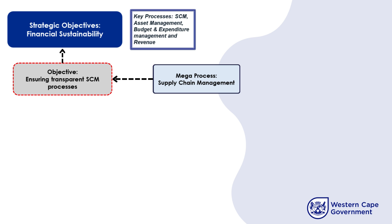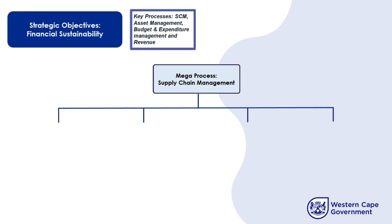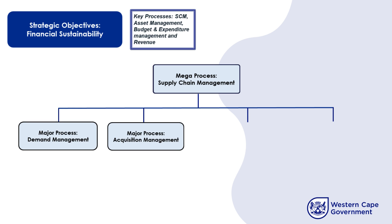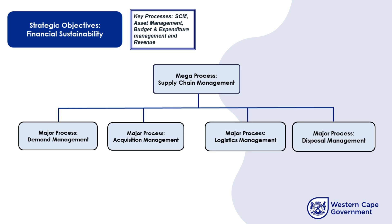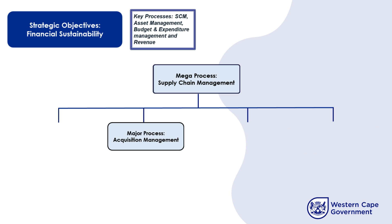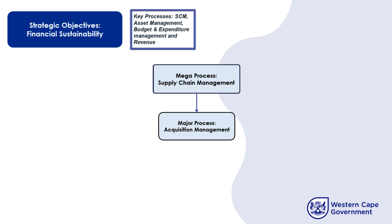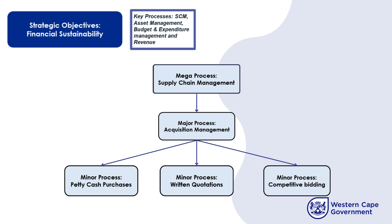As mentioned earlier, this objective would, if achieved, contribute to the strategic objective of financial sustainability. To break down this key process to the second level, we would typically have demand management, acquisition management, logistics management, and disposal management as our major processes. We then go further down to identify the minor sub-processes. For acquisition management, we can see there is a process analysis for petty cash purchases, written quotations, and competitive bidding. There can be additional processes as you perform a proper analysis in your organization.